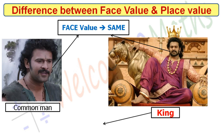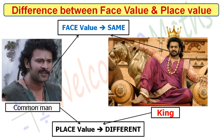And what is different between them? Yes, their position or their place. So the place value is different, because one Bahubali is the common man and another Bahubali is the king. The king is very important. So remember: the face value remains the same, but the place value changes according to the position or place.